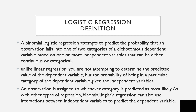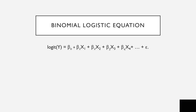An observation is assigned to whichever category is predicted as most likely. As with other types of regression, binomial logistic regression can also use interactions between independent variables to predict the dependent variable.